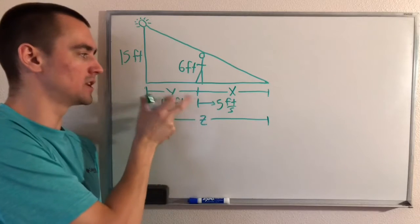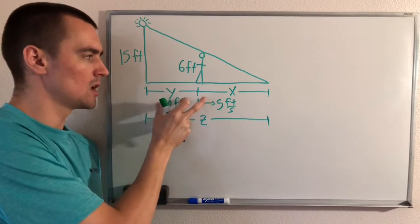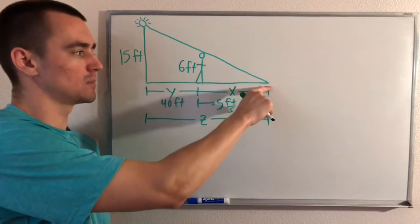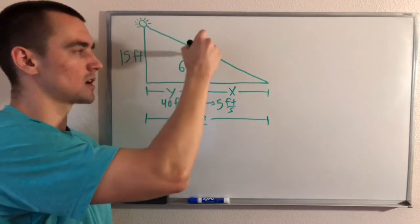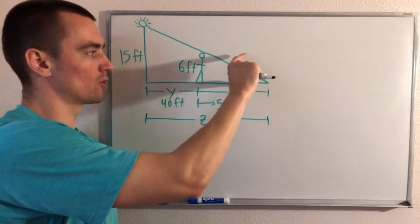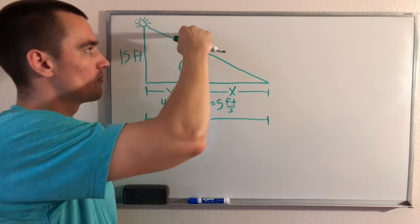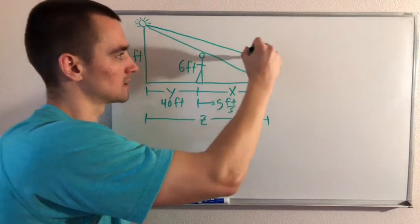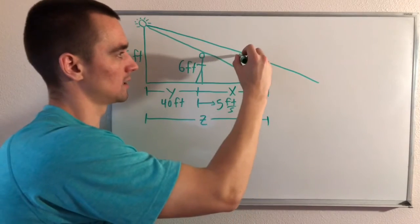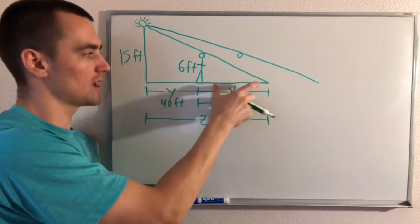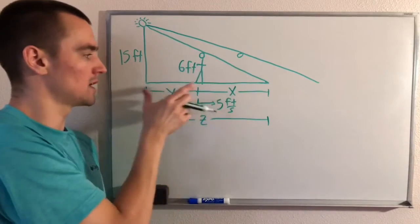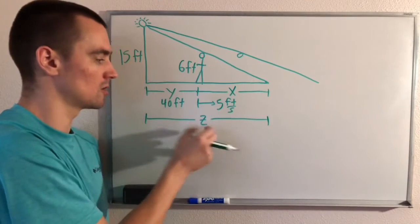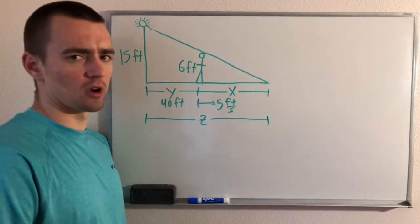The reason I labeled X, Y, and Z is because we want to designate variables to the measurements that are changing over time. As this man walks away from the pole, the distance between him and the pole increases. The length of his shadow increases because the tip of the shadow is always on the straight line from the light to the top of his head and beyond. So X, Y, and Z all get longer.